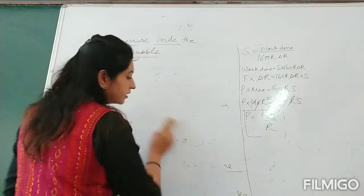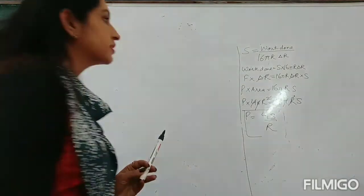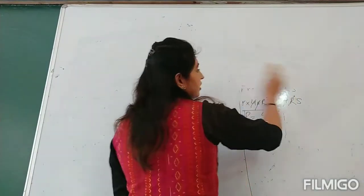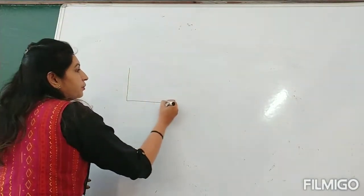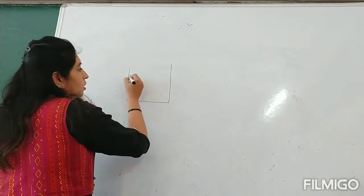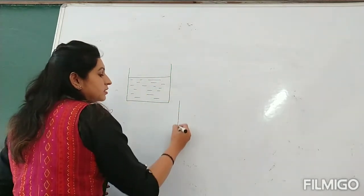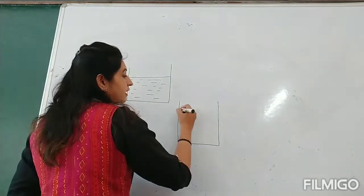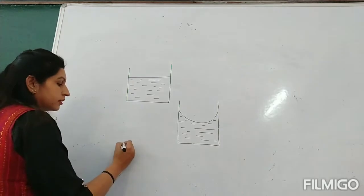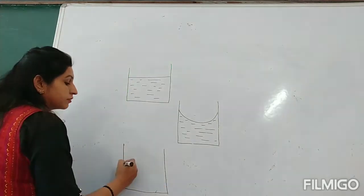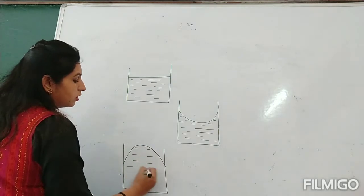We will discuss angle of contact. We have already done concave meniscus and convex meniscus. We will consider 3 different types of meniscus again: one is plane, one is concave, and one is convex. Let me draw all three.